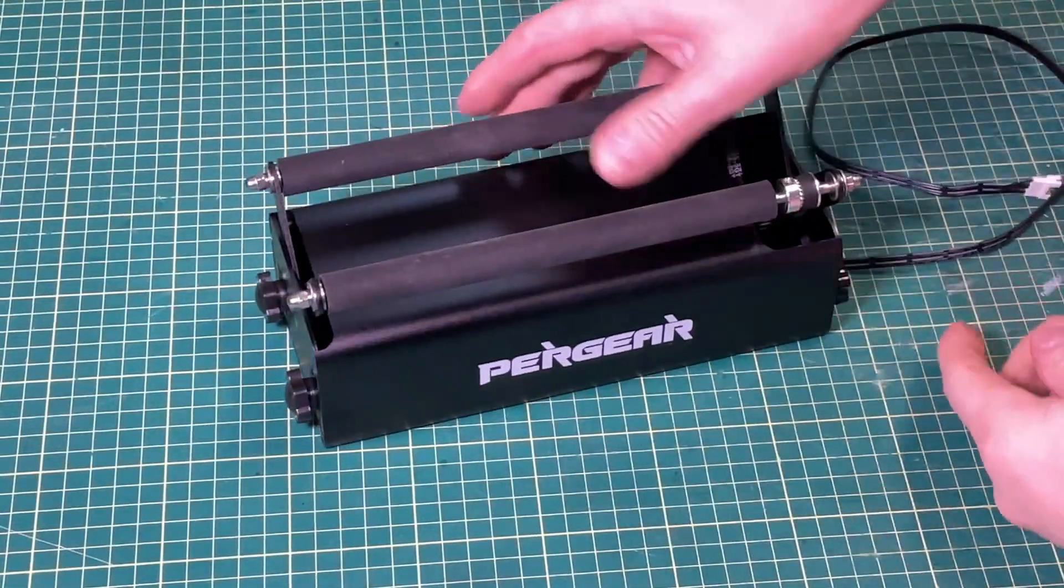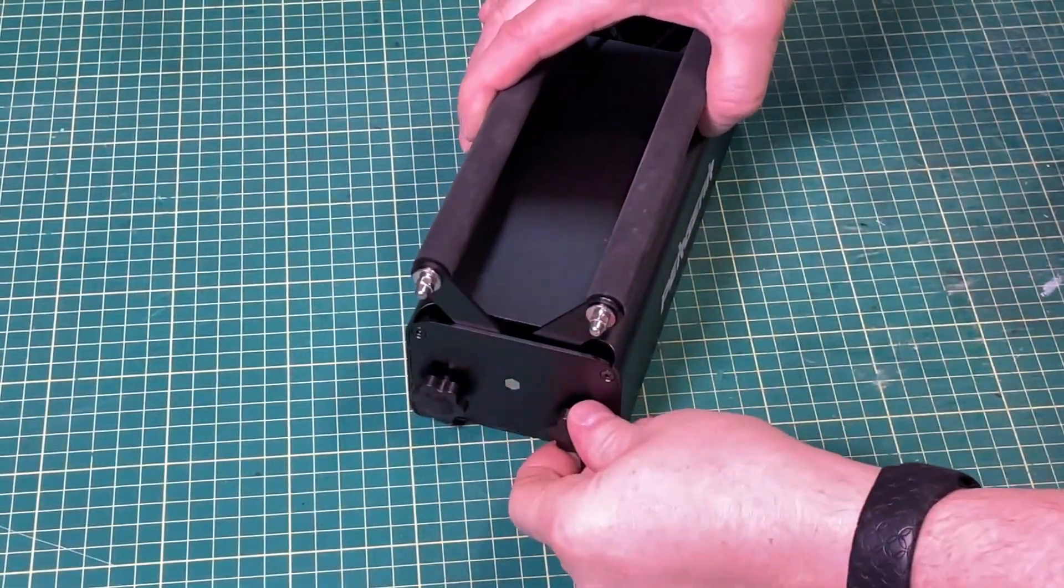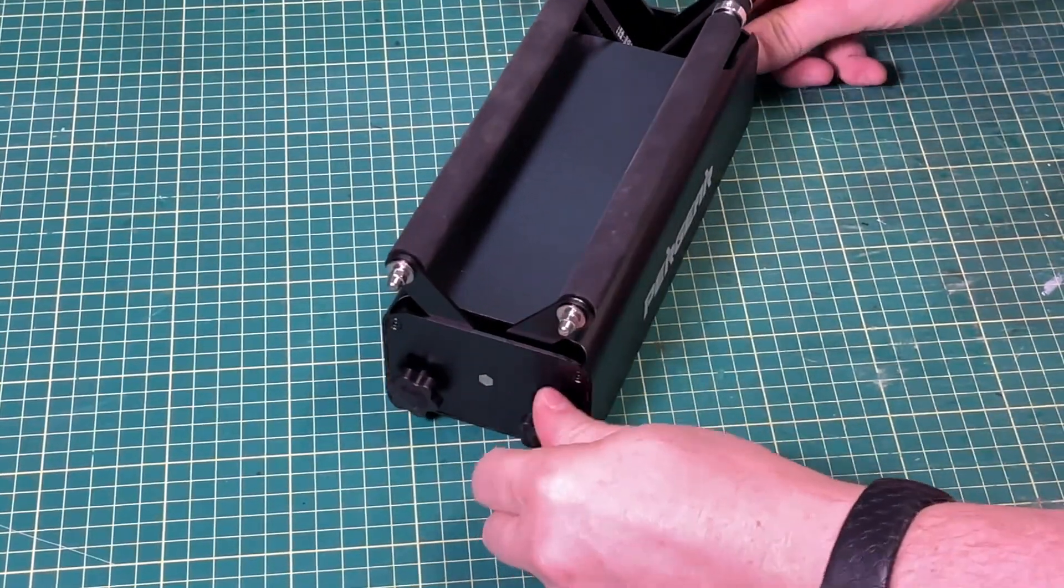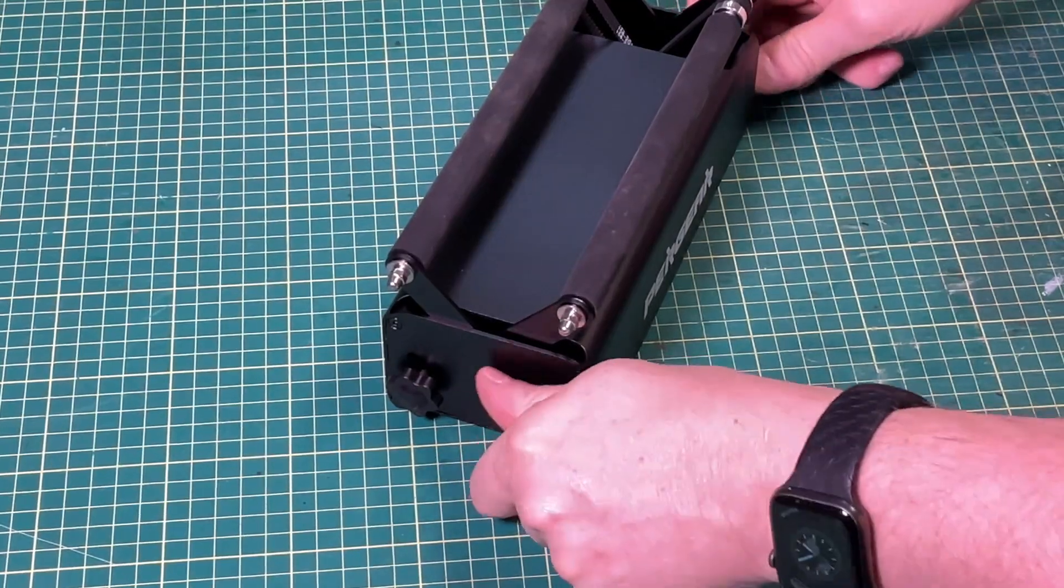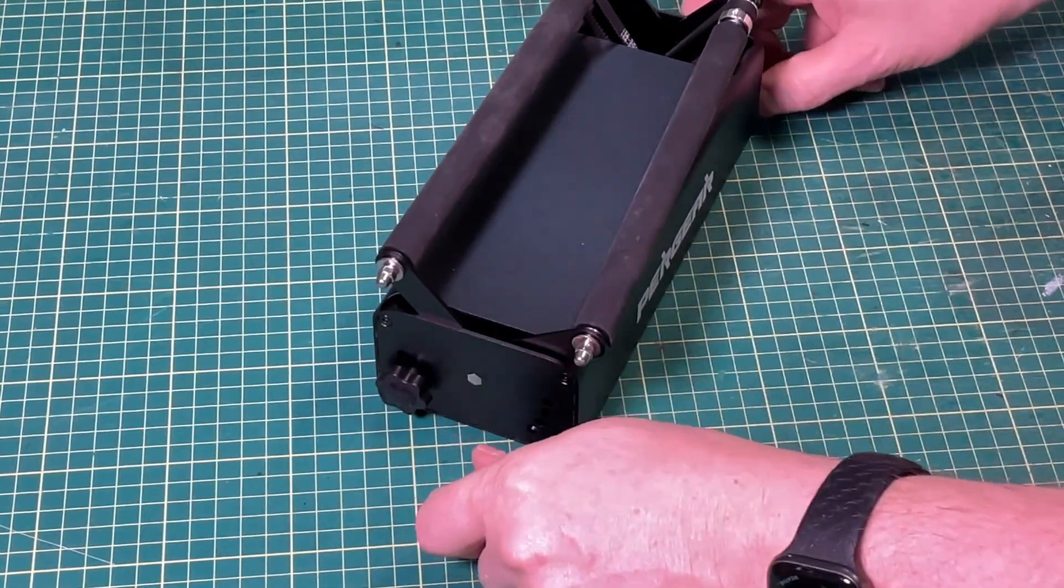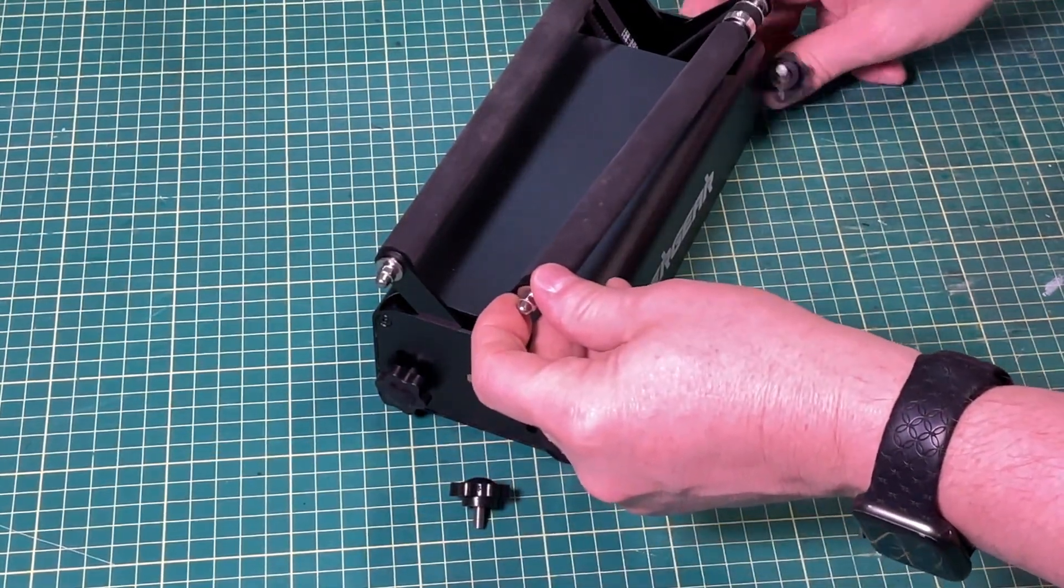Now on the adjustment front there's some thumb screws on both ends and if you loosen these you can screw them all the way out and once you do that you can see there's slack.